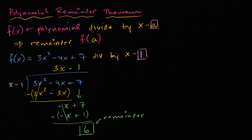Let's now do a proof of the polynomial remainder theorem. And just to make the proof a little bit tangible, I'm going to start with the example that we saw in the video that introduced the polynomial remainder theorem. We saw that if you took 3x squared minus 4x plus 7 and you divided by x minus 1, you got 3x minus 1 with a remainder of 6.